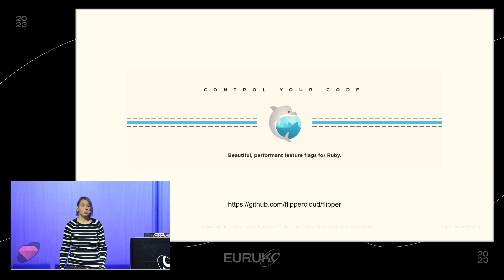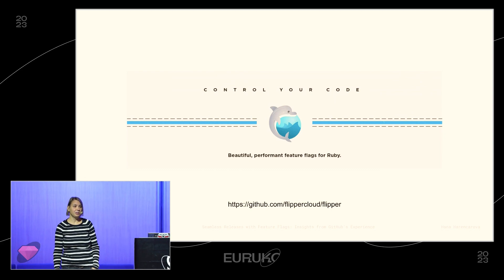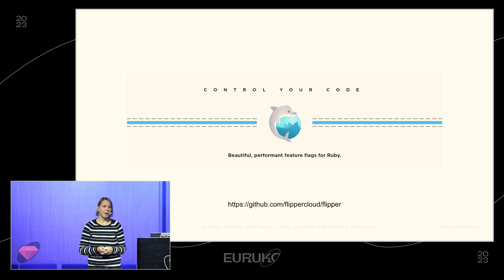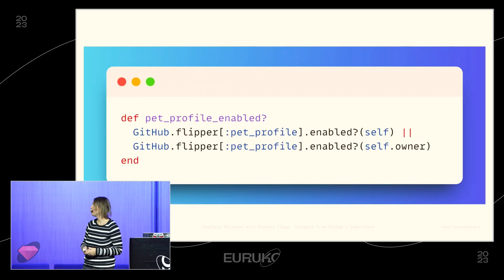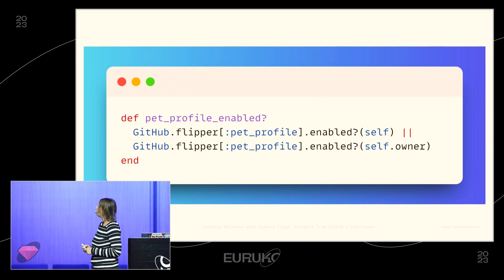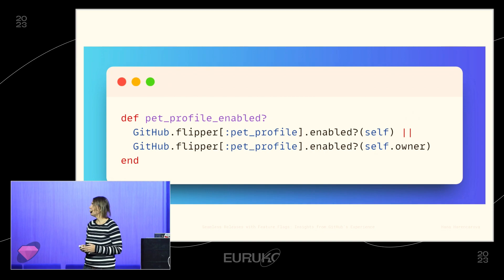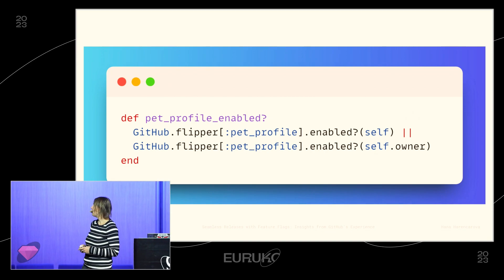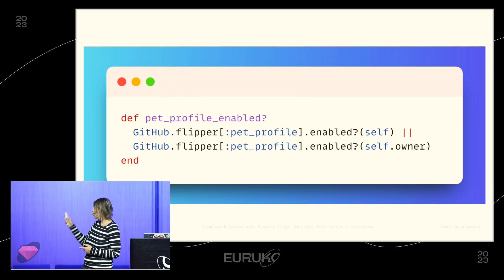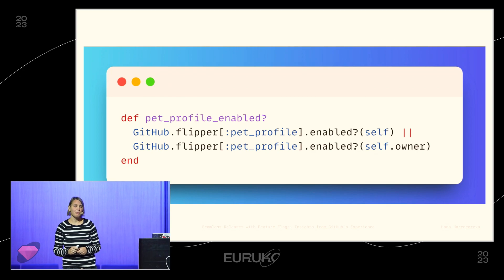We use Flipper, which is an open source implementation of feature flags. At GitHub we have our own extension of Flipper and our own tooling. We would define the feature with a helper method like `pet_profile_enabled?`, where we ask Flipper. In our case, we often check for either actor — at code scanning we work with repositories, so we often enable feature flags for repositories or for the owners of those repositories.